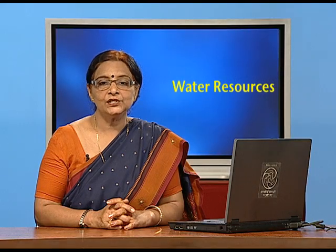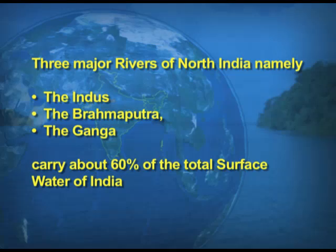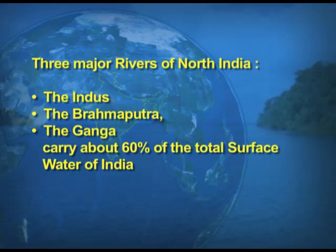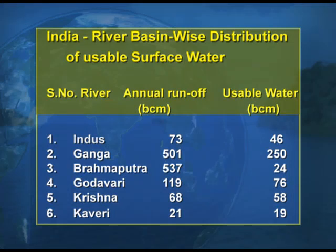Surface water is considered the most important source of fresh water. Major rivers in the northern part of India include the Indus on the western side, the Brahmaputra on the eastern side, and the most sacred river of northern India, the Ganga. Now look at the screen — this table shows different river basins and their distribution of surface water.